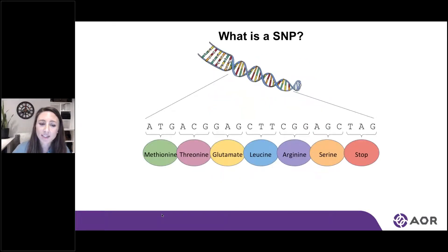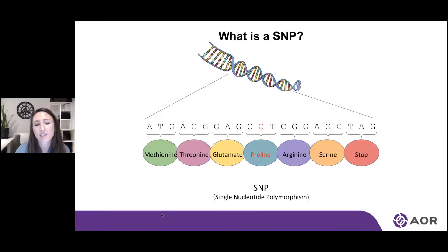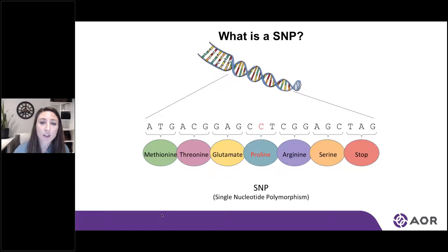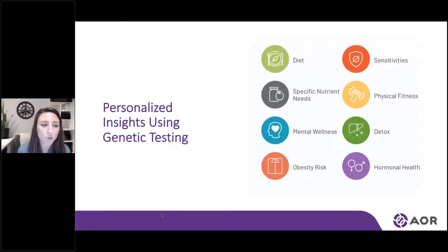When we get into genetic testing, we're identifying how changes within the genetic code can actually influence our health. When we look at something called a single nucleotide polymorphism (SNP), we're looking at one of these letters — a nucleotide — being changed. For example, if we change a T into a C, this changes leucine into a proline. SNP testing looks at some of these changes and how they can affect proteins and their outcomes in clinical practice. This is how we start to determine personalized insights when looking at specific lifestyle interventions.